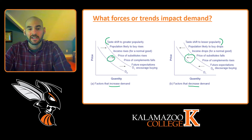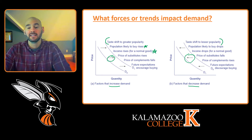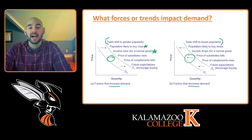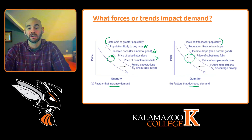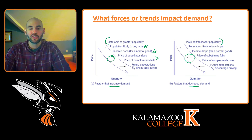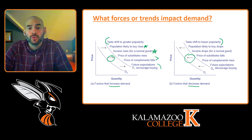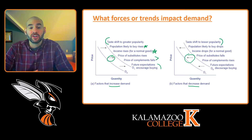Another important factor is population: when the population buying a good increases, demand increases. If a good is a normal good — meaning the richer you become, the more you buy — then an income increase would increase demand. We also think about the price of related goods: if the price of a substitute rises or the price of a complement falls, demand will increase. Additionally, future expectations matter — if you expect the price of a good to rise in the future, that will temporarily increase current demand.